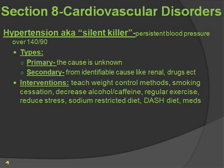Hypertension is also known as a silent killer because many times there are no symptoms. It is persistent blood pressure over 140/90. There are two types: primary, where the cause is unknown, and secondary, where the cause is known — such as renal disease or certain medications. Interventions include weight control, stopping smoking, decreasing alcohol and caffeine, regular exercise, reducing stress, a sodium-restricted diet, and a DASH diet — increasing fruits, vegetables, and low-fat dairy while limiting saturated fats. Medications include diuretics, beta blockers, ACE inhibitors, ARBs, and calcium channel blockers.